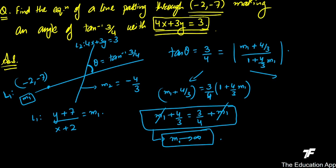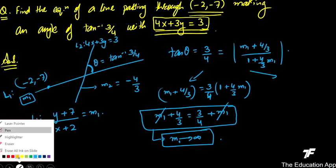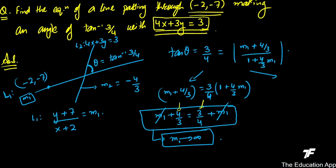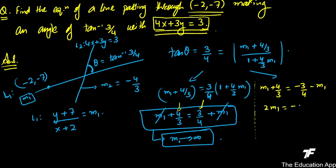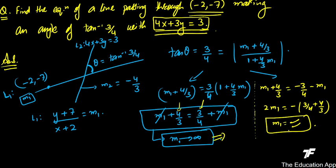When such a contradiction arises, it means one of the slopes is tending to infinity. M is tending to infinity, because adding 4/3 or 3/4 to infinity makes no difference — both sides remain equal. So this case tells us one answer corresponds to a vertical line (slope → ∞).